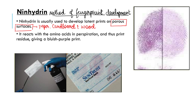When there is a fingerprint residue deposited on a porous surface, there is a high chance it gets absorbed. Because of this absorption, the powder method cannot develop the print. That's why we need the ninhydrin method — because porous surfaces absorb the fingerprint residues. Ninhydrin will react with amino acids present in the fingerprint residue.